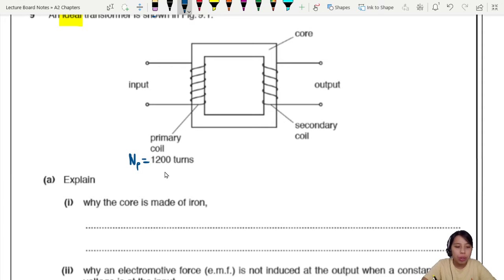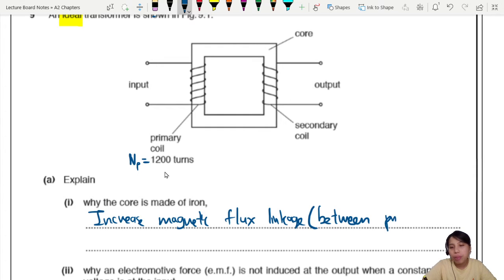The main purpose of an iron core is to increase the magnetic flux linkage between primary and secondary coil. If the iron core wasn't there, your flux may not all go over to the secondary core and it's not as strong. So increased flux linkage is the purpose of the iron core. It also becomes magnetized so it can do that.